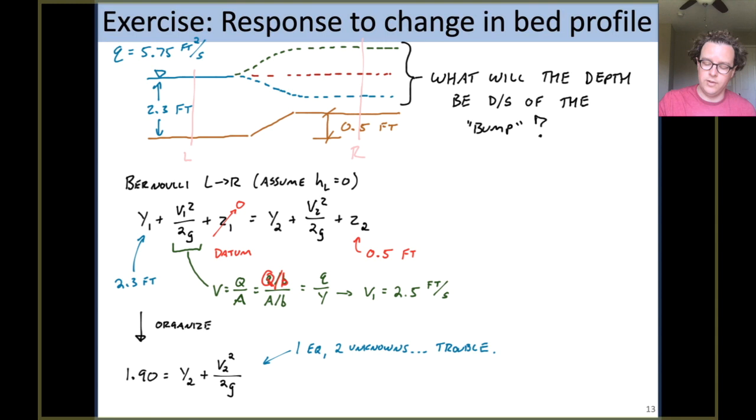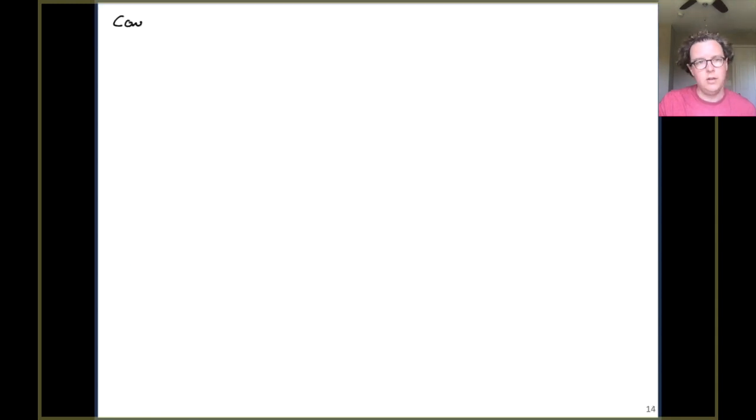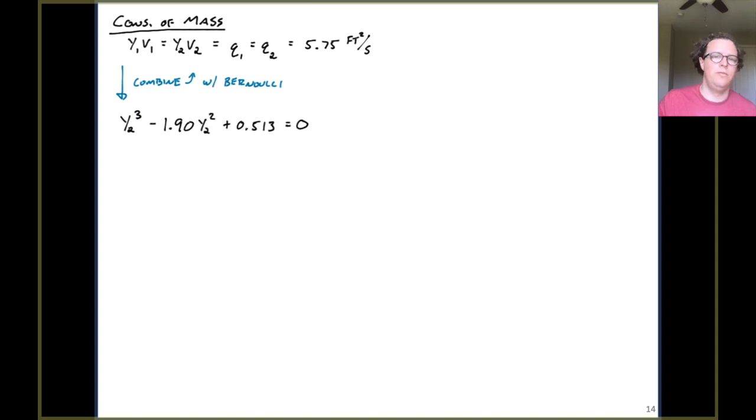We also know conservation of mass and conservation of momentum. I'm going to go ahead and pick conservation of mass, generally being the simpler of those two options. And so what we know is the mass rate coming in must equal the mass rate flowing out, or the mass rate at point 1 must equal the mass rate at point 2. Or specific discharge must be the same. That assumes the width of the channel doesn't change. And so with that knowledge, we can combine that with our Bernoulli equation, and we end up with the following. The y2 cubed minus 1.90 times y2 squared plus 0.513 equals 0.